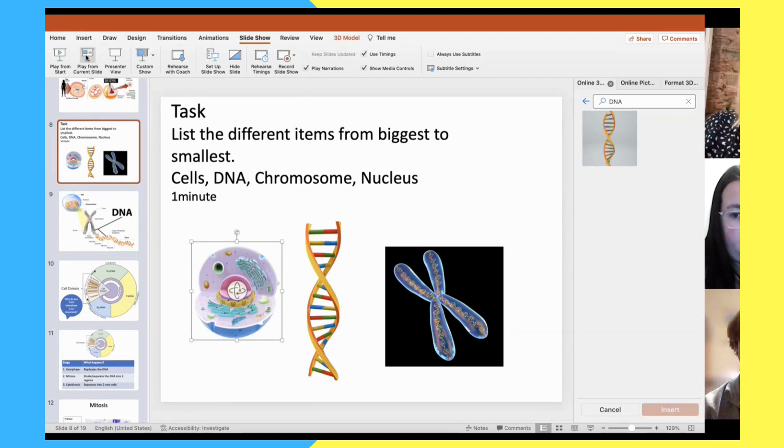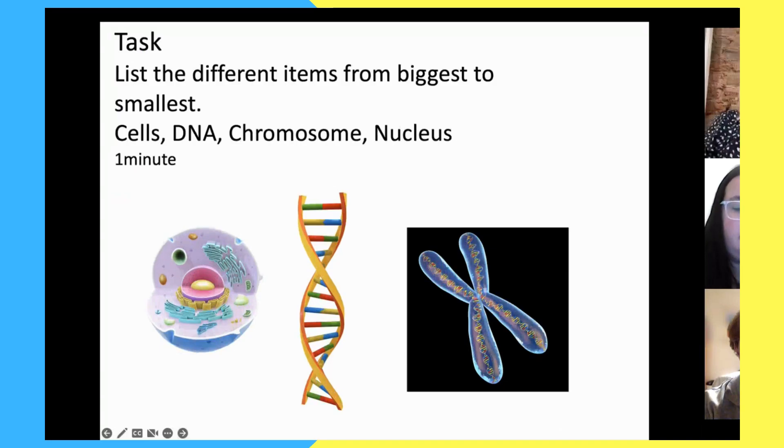So thinking about this then, we've got our cell here, here's the nucleus within the cell and some organelles around here that I'm sure we can name some of those. For example, this little mitochondria here - I always think they look a little bit like a cone.